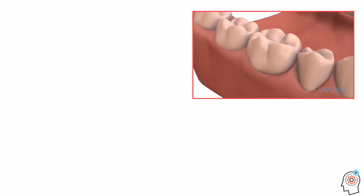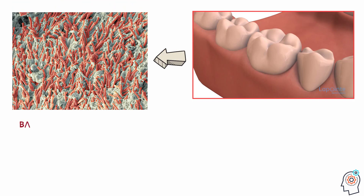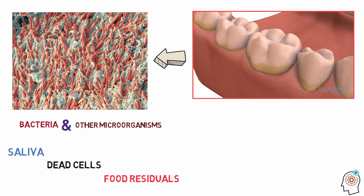Dental plaque is a sticky, soft, and almost colorless layer of bacteria that constantly builds up on the surface of the teeth and gums. It can be composed of colonies of bacteria and other microorganisms mixed with bacterial byproducts, saliva, dead cells, and food residuals.